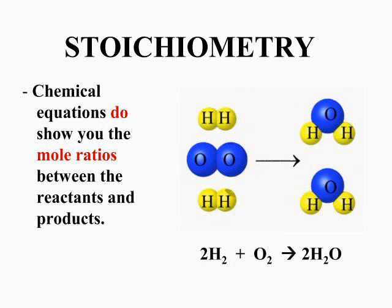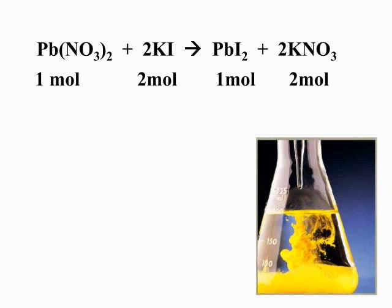Once you have the balanced chemical equation, you use those mole ratios to solve for moles of any reactant or product in the chemical equation. This reaction reads: one mole of lead 2 nitrate reacts with two moles of potassium iodide to produce one mole of lead 2 iodide and two moles of potassium nitrate.